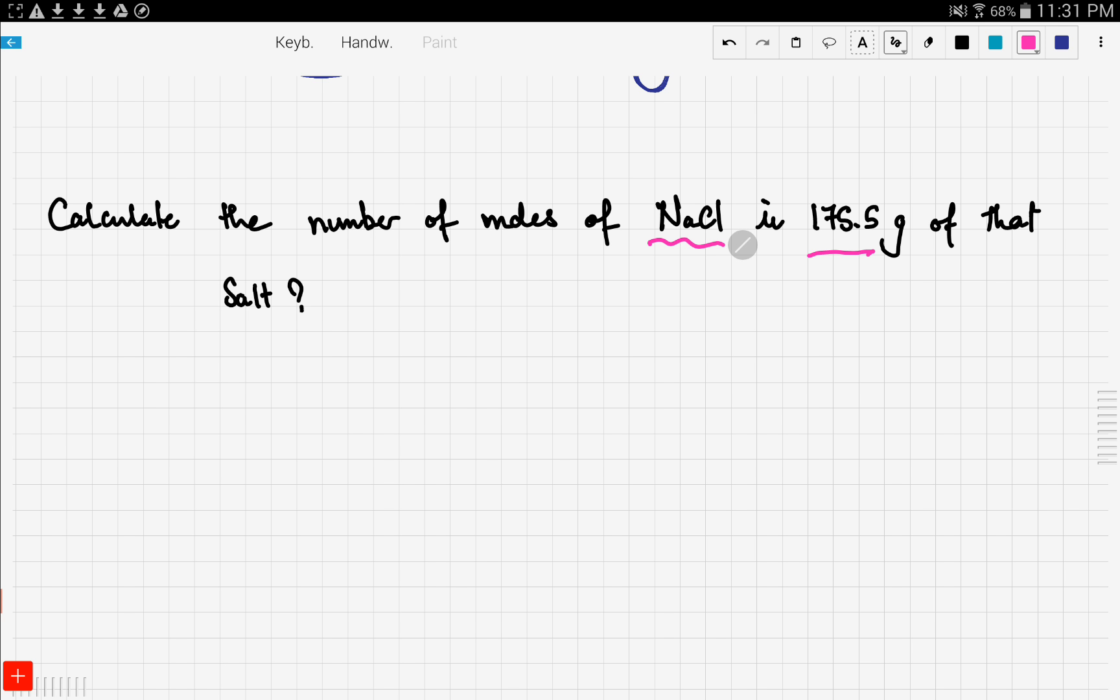Well the first step we're gonna do is calculate the molar mass of NaCl. Now as we learned in the previous video, sodium we only have one sodium. So we go back to our periodic table and we find the atomic mass which is 22.9, and we only have one so 22.9.